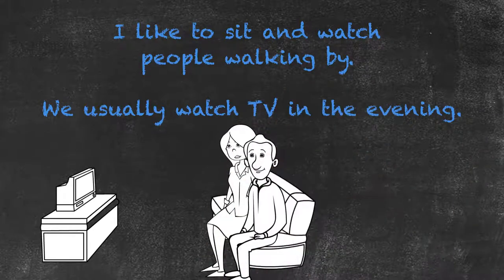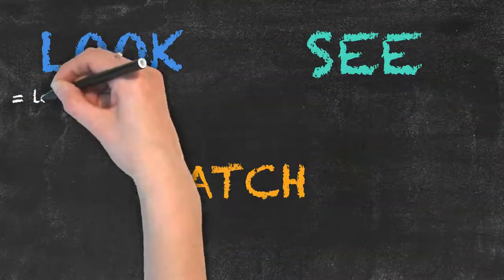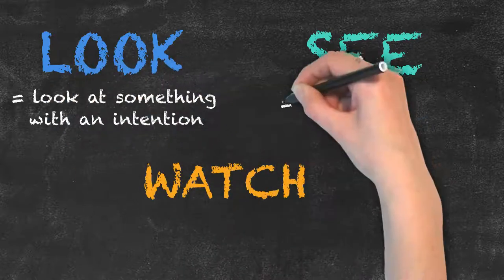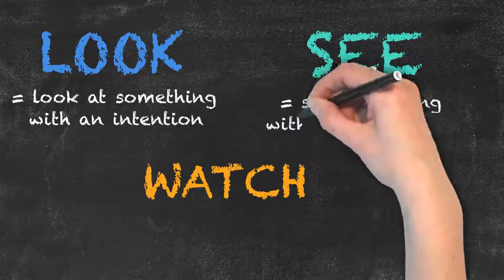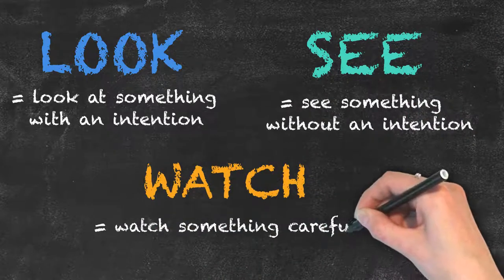So remember, look is used when we look at something with an intention. See is used when we see something without an intention. And watch is used when we watch something carefully and often also something that is moving. That's it for today.